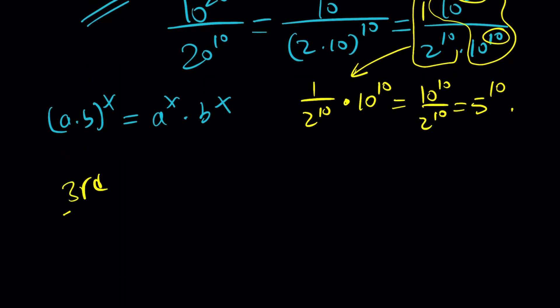Third method. So for my third method, I would like to do the following. Let me rewrite the problem first. 10 to the 20 divided by 20 to the 10. I know some people are thinking, why don't you use a calculator? You can just go ahead and split up. Yes, definitely. You can always do that. Anyway, so let's go ahead and see how we can do this differently. I can use prime factorization.